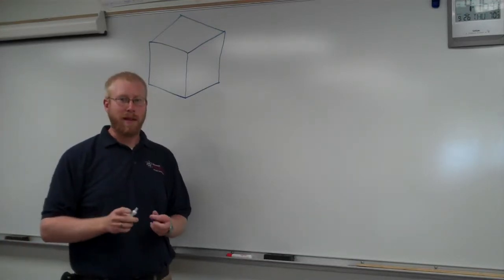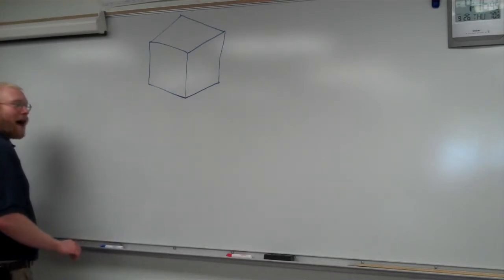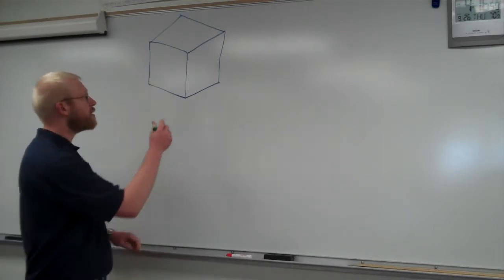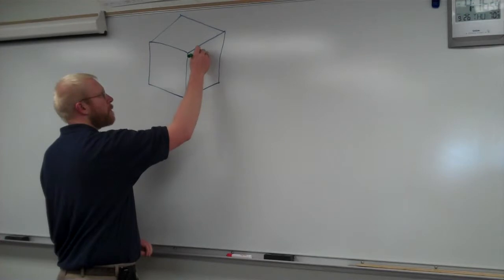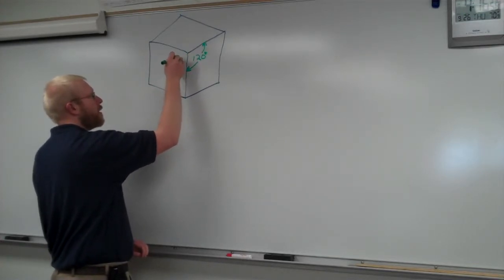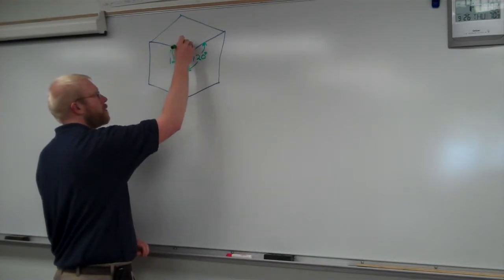Some places that teach isometric drawings talk about how isometrics have three 120-degree angles in them that they use. Right here would be 120 degrees, right here would be 120 degrees, and right up here would be the 120 degrees, the last one.